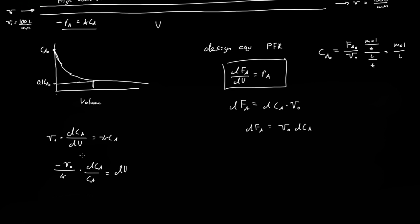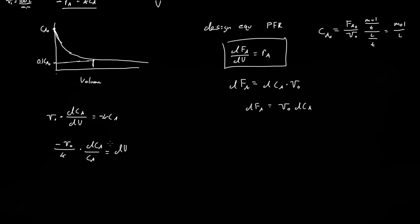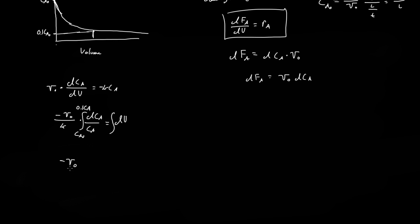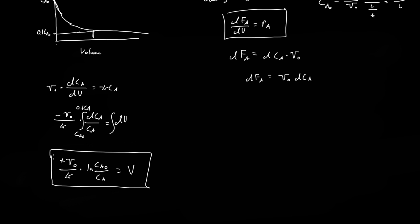Integrating both sides — from CA₀ to 0.1·CA₀ on the left and from 0 to V on the right — we get: V = (V₀/k)·ln(CA₀/CA). This is the first-order plug-flow reactor design equation.